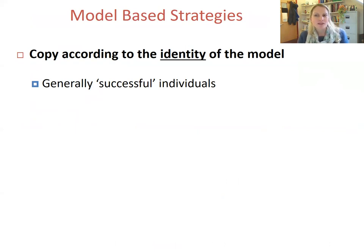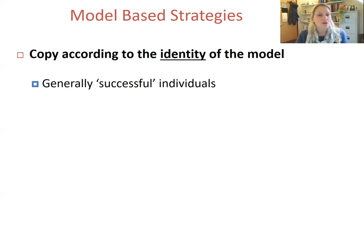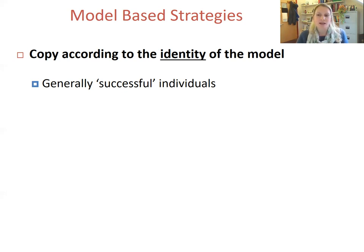We now move on to the final category of context-dependent social learning strategies: model-based biases, where individuals copy the behaviour of models according to their identity. These model-based biases are often to do with copying generally successful individuals, such as those that have reached an old age, attained high dominance or prestige, or those that have proven themselves proficient in similar domains in the past. If these individuals have managed to reach old age or attain dominance, a rule of thumb to copy them should provide a quick and easy means of enabling individuals to copy what is likely to be a beneficial behaviour.